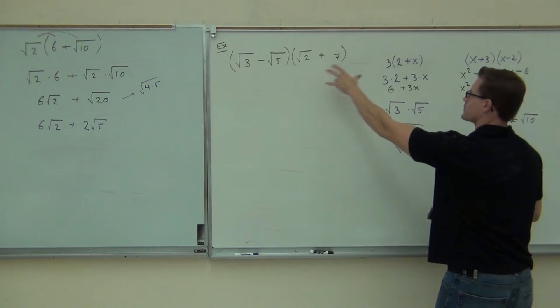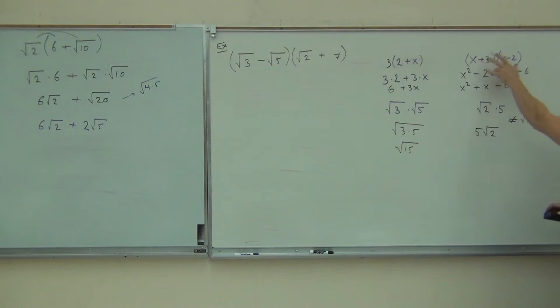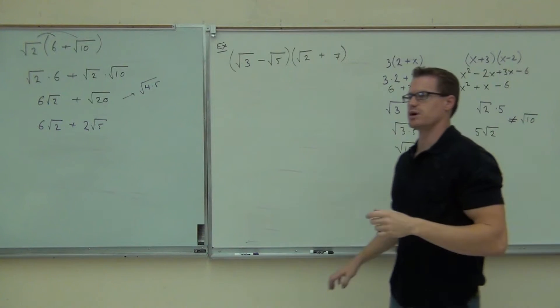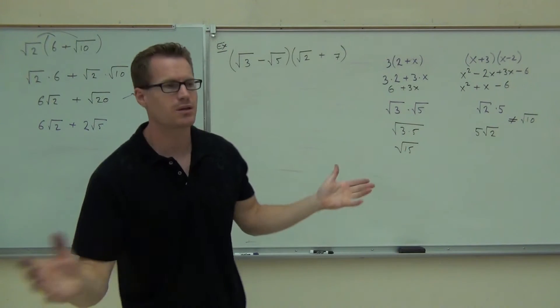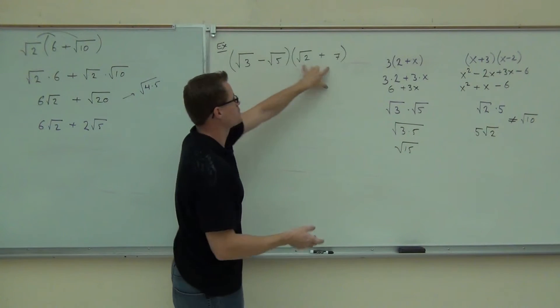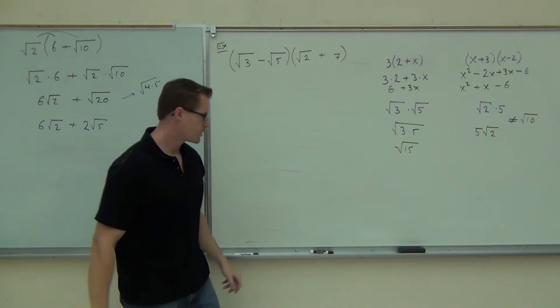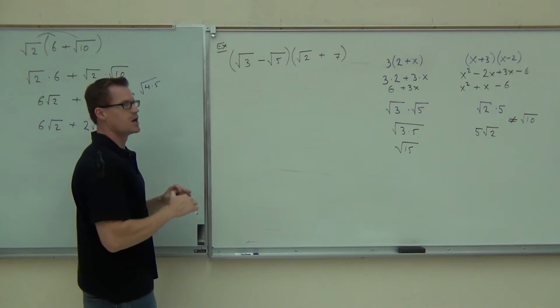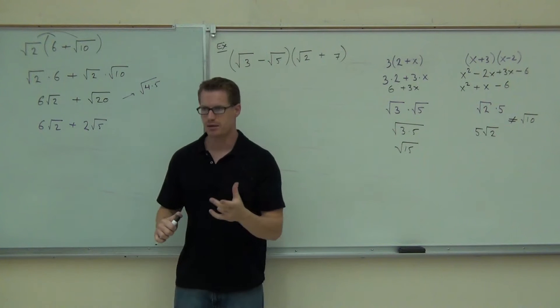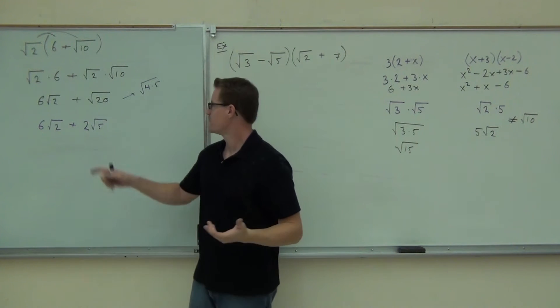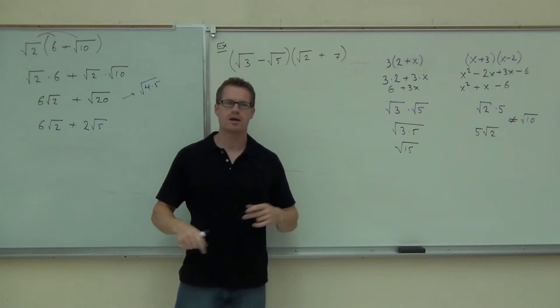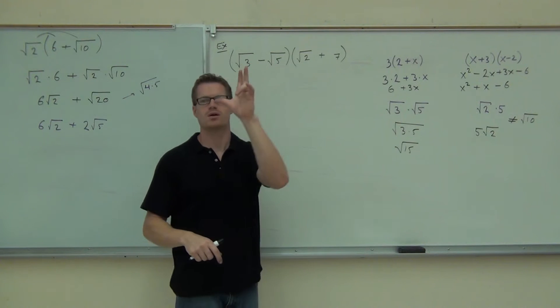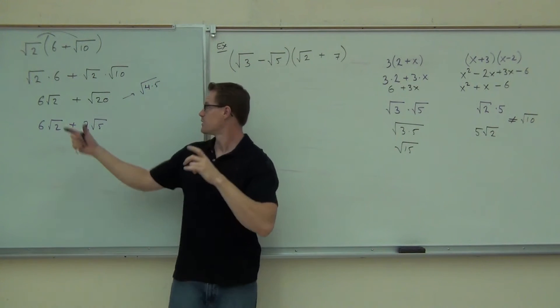Okay, so this one, instead of looking like a first example, we actually look at our second example here. We have a FOIL situation. We're going to distribute these just like we FOIL anything else with two terms, but we've got two terms that are not combinable. So when we FOIL this, let's watch carefully what happens. Don't distribute it in your head. Write it out.